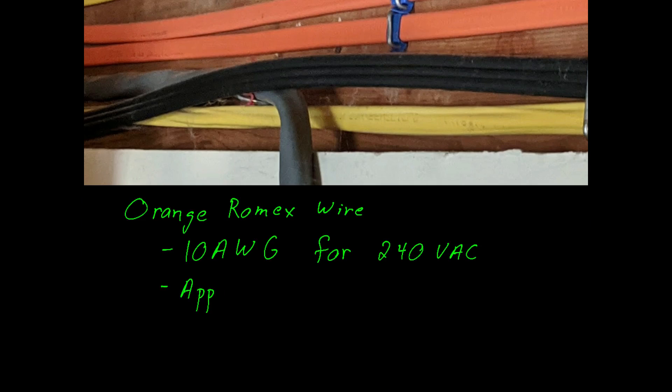In this video we're going to focus in on the orange Romex wire. This is 10-gauge wire, and it's generally used for 240-volt circuits. You can look up the resistance in a table and you'll find that it's approximately 1 ohm per 1,000 feet.